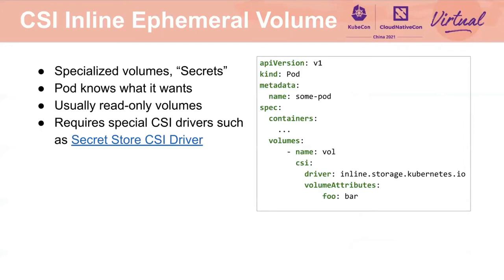Next, I want to talk about the CSI inline ephemeral volume. We set the volume type to CSI in the pod spec and specify the driver name and the volume attributes. For a CSI driver to support CSI ephemeral volumes, it must be modified or implemented specifically for this purpose. A CSI driver is suitable for CSI inline ephemeral volumes if it serves a special purpose and needs custom parameters, like drivers that provide secrets to a pod — the Secret Store CSI driver is an example. A CSI driver is not suitable for CSI inline ephemeral volumes when provisioning is not local to the node, or when ephemeral volume creation requires volume attributes that should be restricted to an admin, such as parameters in a storage class.